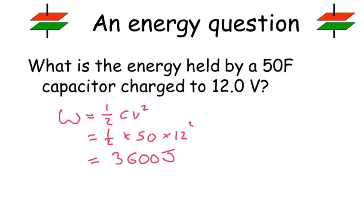What is the energy held by a 50 farad capacitor charged to 12 volts? Well, from the previous slide, we're going to use this equation here. So the energy, W, is equal to a half times CV squared. Put the values in, and then we find that in this case we'd have 3,600 joules of energy being stored on our capacitor.